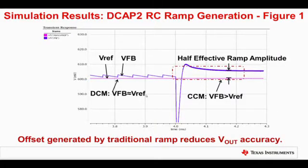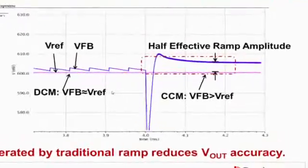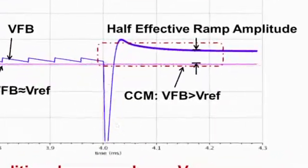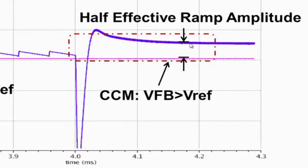What you also see on this slide here is a DCAP2 Control Mode converter settling after a load transient event, and you see here that the output voltage does not actually settle back to the original output voltage prior to the load transient event. So there is a DC offset here that unfortunately increases the DC tolerance and provides additional inaccuracy of the DC output.